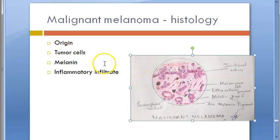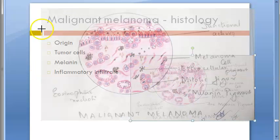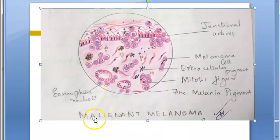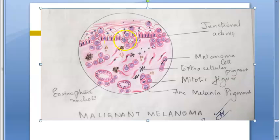Now we are moving on to the histology. This is the diagram from our lab — let's see what we can understand from it. You can see there is some junctional activity.